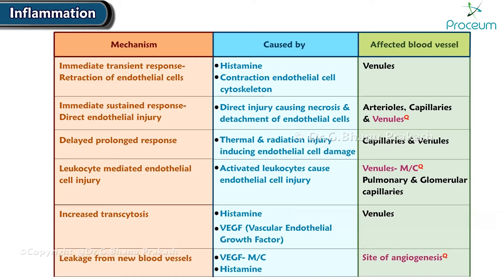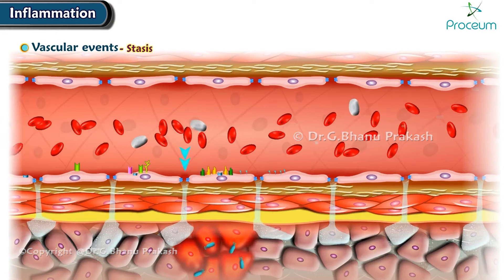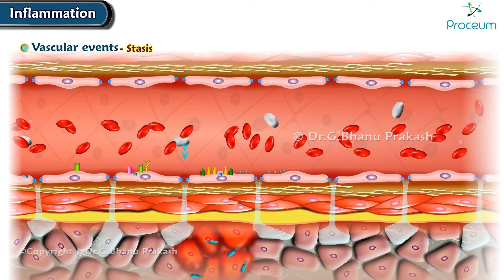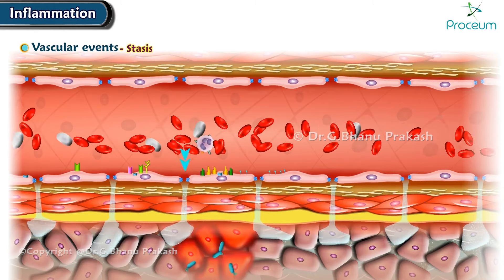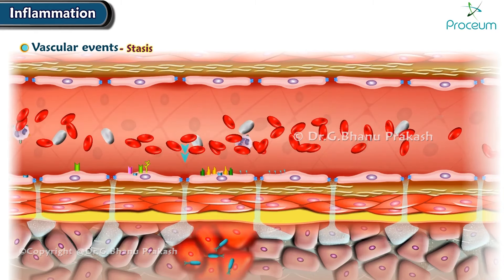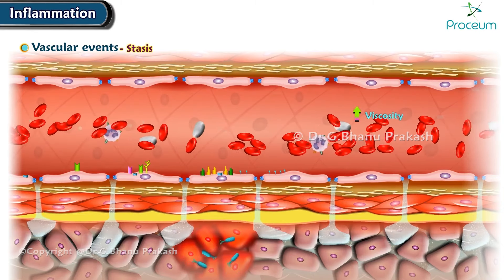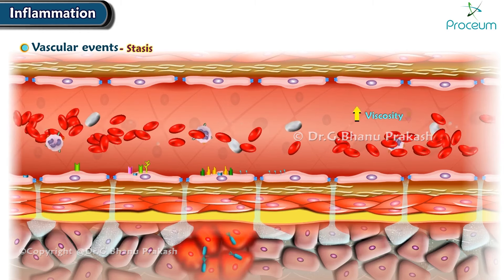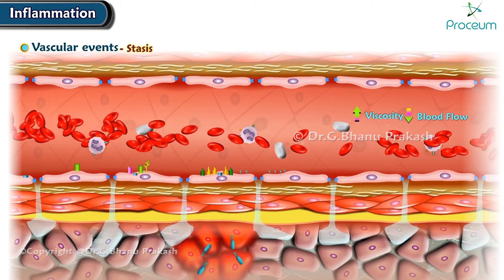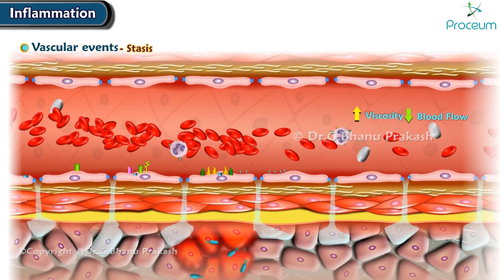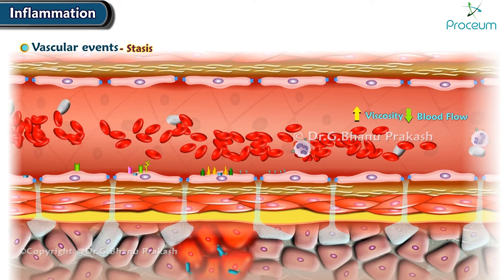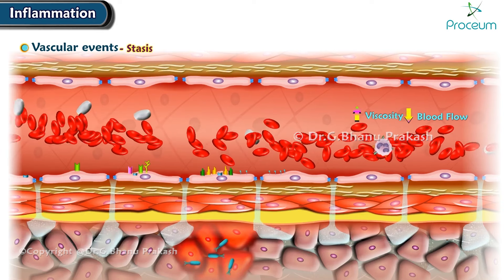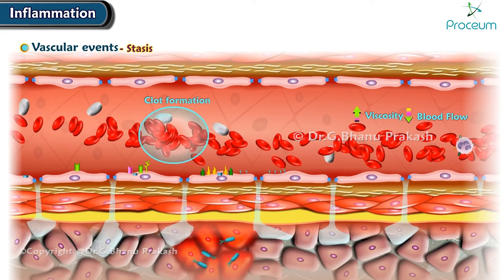The last vascular change we'll talk about is called stasis. The loss of fluid is responsible for the concentration of red cells in small vessels. Due to this increased viscosity, there will be slower blood flow — this phenomenon is known as stasis. Therefore, inflammation is associated with increased chances of clot formation.